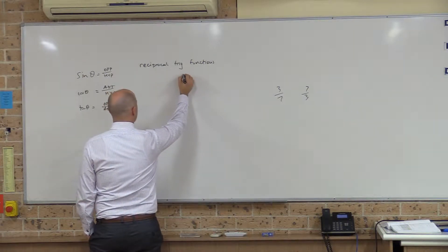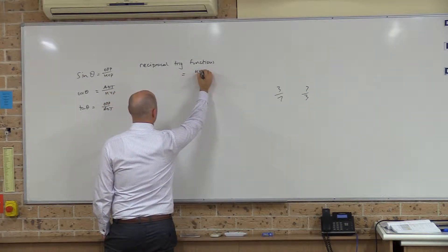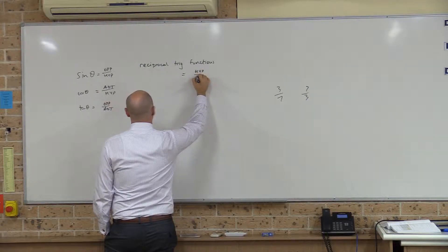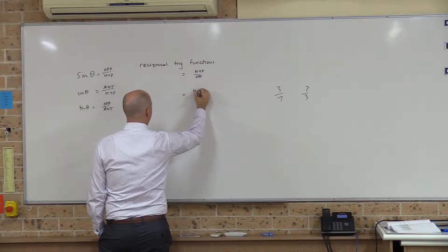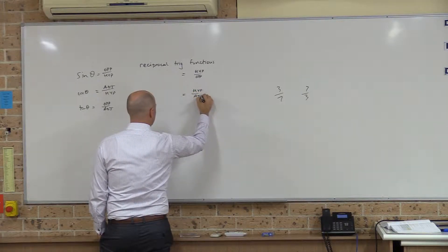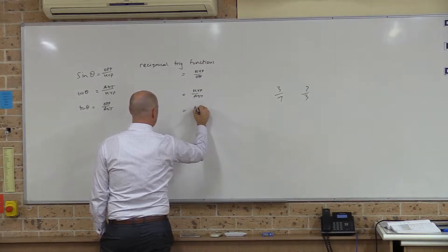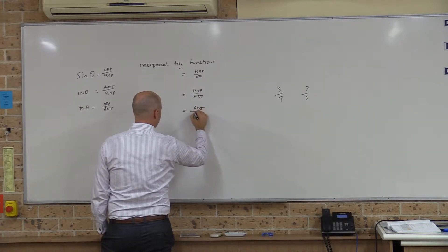And so we have a reciprocal trig function that is hypotenuse over opposite, and we have a reciprocal trig function that is hypotenuse over adjacent, and a reciprocal function that is adjacent over hypotenuse.